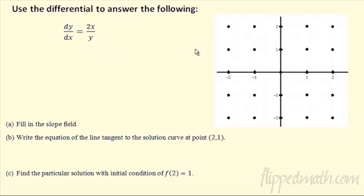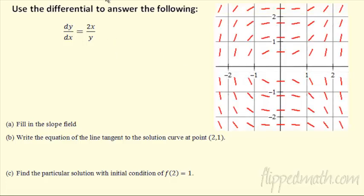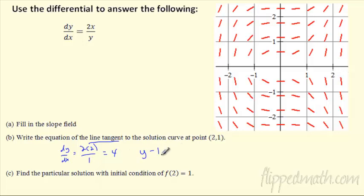So if I have another differential equation here, remember this goes back to slope fields — we can create a slope field showing the derivative at every single point. I went ahead and drew the slope field for this. Part B is kind of review: write the equation of the line tangent. As soon as you see line tangent, you're thinking first derivative. There's the dy/dx right there. The point is (2, 1), so you can just plug that in. The derivative is 4 — that's the slope of the tangent line. So the equation is y minus 1 equals 4(x minus 2).